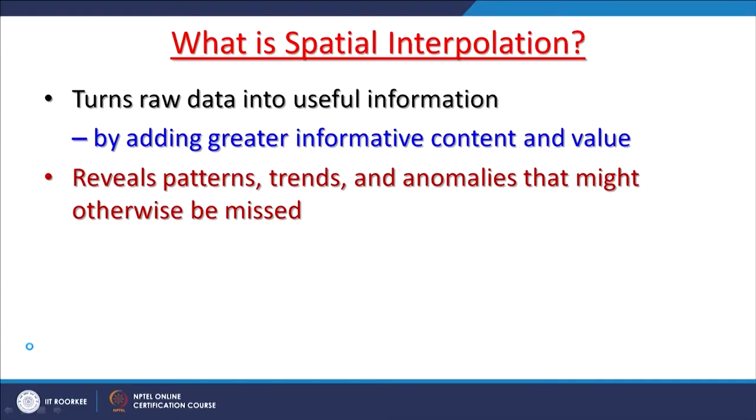Once we do the interpolations, we can reveal a lot of patterns — what are the low areas, what are the high areas. From input point data it is not very easy. But with this interpolated surface, we get a lot of information about patterns, trends, and anomalies. There might be lows or highs or anomalies in any dataset. After converting through spatial interpolation into a surface, we can detect anomalies, mask other areas, and use only the anomalous area.